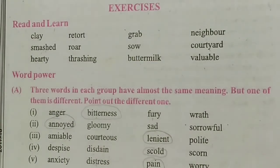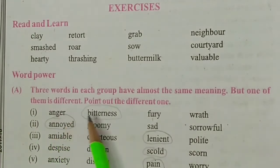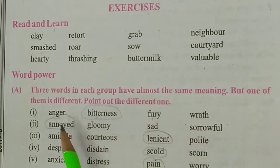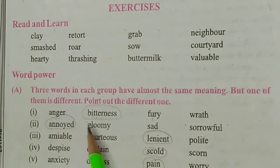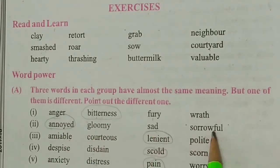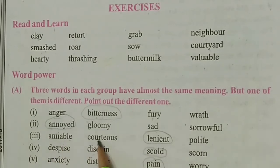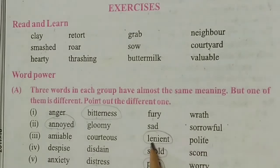From Word Power: three words in each group have almost the same meaning but one is different — point out the different one. First group: anger, bitterness, fury, wrath — 'bitterness' is the different one. Second: annoyed, gloomy, sad, sorrowful — 'annoyed' is the different word. Third: amiable, courteous, lenient, polite — 'lenient' is the different word.